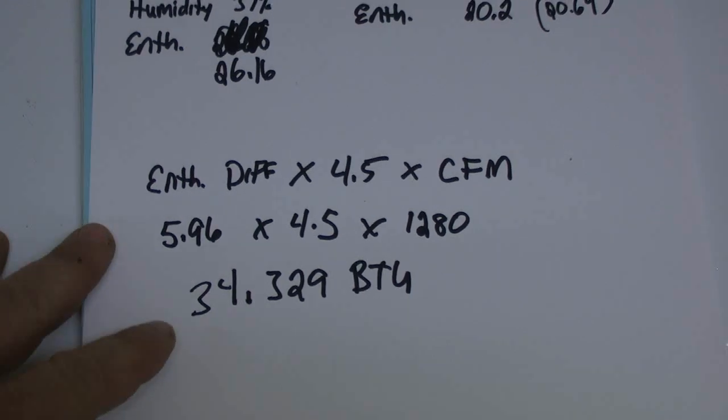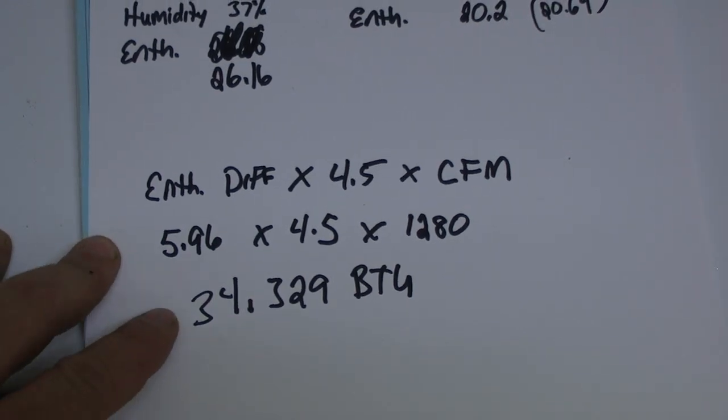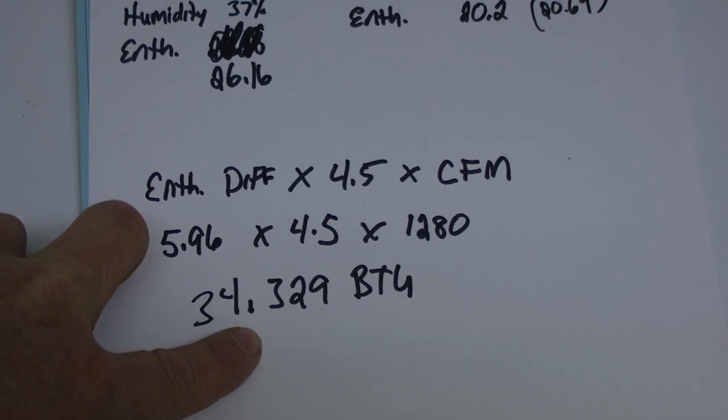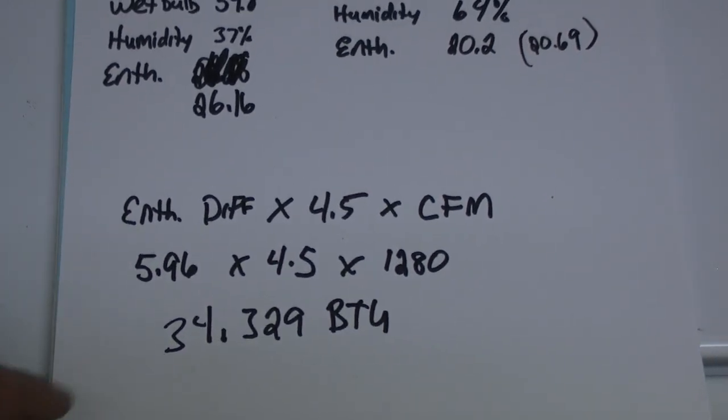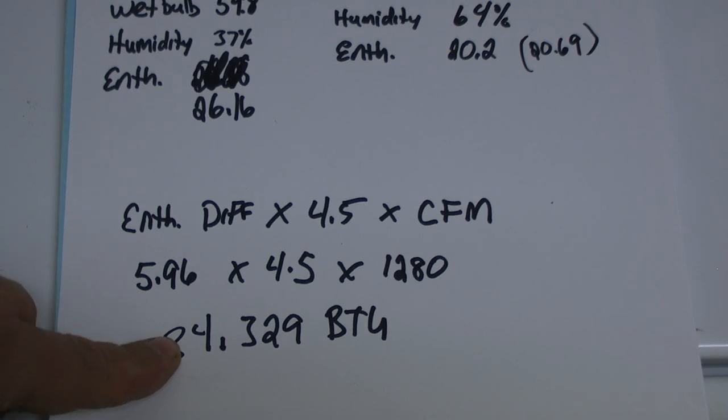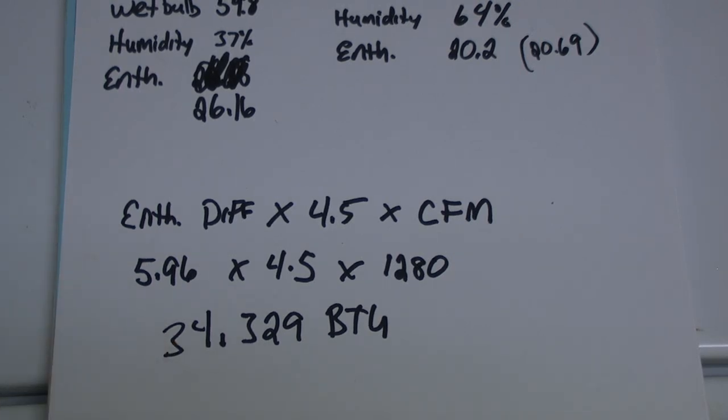One thing you're going to see sometimes is that this number could be 38, 39,000 BTU, so it's showing it's pushing out too much. One of the main reasons that happens, if it was really high, is that your CFMs are too high.